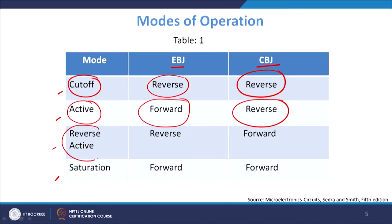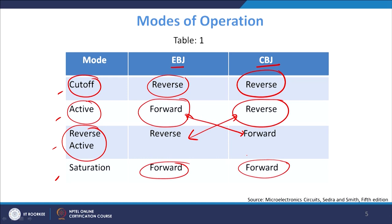Reverse active is when you just reverse these two: the emitter-base junction is now reverse biased and the collector-base junction is forward biased, so you do not allow large emitter currents to flow but instead forward bias the collector-base junction. The last mode is saturation, in which both emitter and collector junctions are forward biased, allowing a large amount of current to flow. So there are four modes of operation: we can use the transistor as a switch moving from cut-off to active to saturation, or as an amplifier.